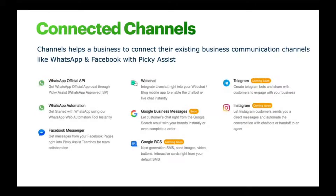Picky Assist is an authorized ISV of WhatsApp to onboard clients across the world for the WhatsApp Official API. We also have our own WhatsApp Automation tool that lets you connect your existing WhatsApp Business or personal account with Picky Assist to achieve the same level of automation. Facebook Messenger and Instagram are already integrated, and we also have a chat widget. We continuously update new channels.